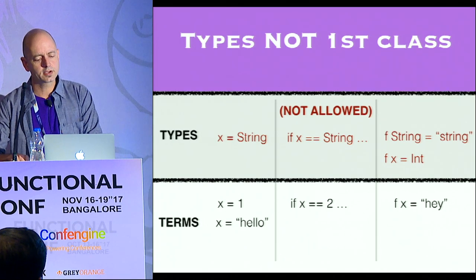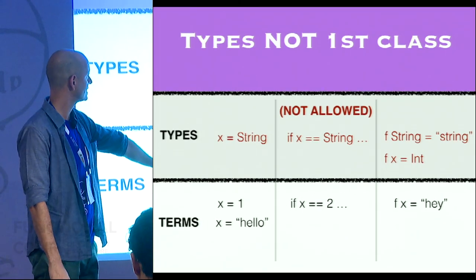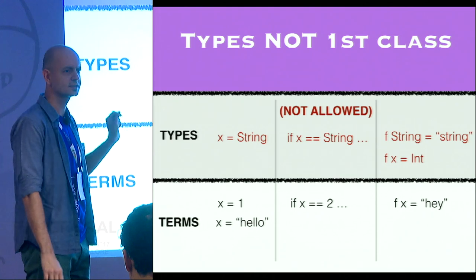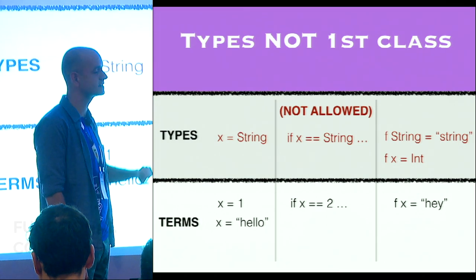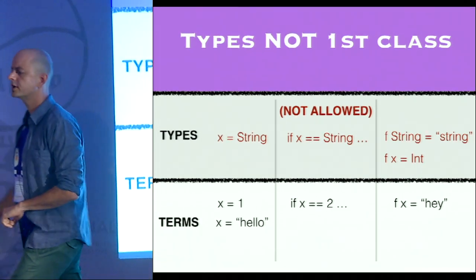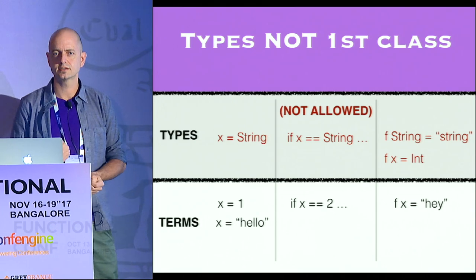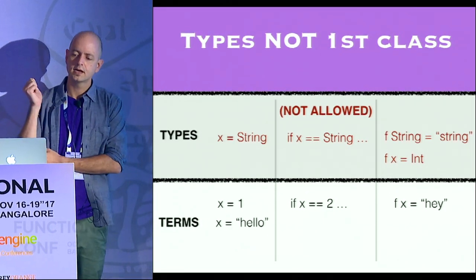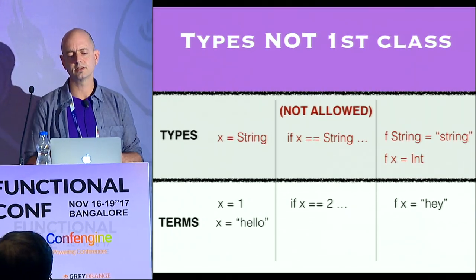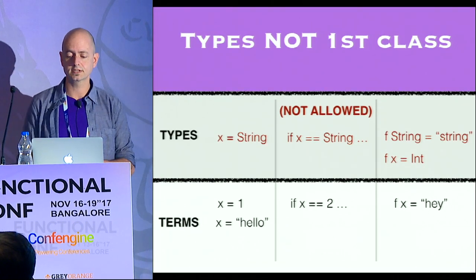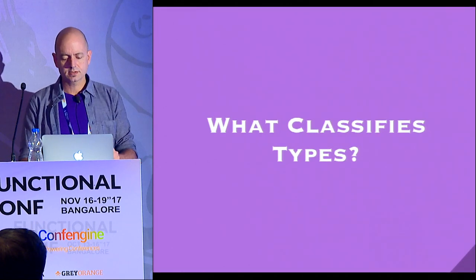Still in Haskell, types are not first class. You can say x equals hello, but you can't say x equals the type String. The compiler doesn't know what you mean. You can do equality on terms, but you can't say if x equals type String. You can pass values to functions, but you can't pass types to functions. You can't return types from functions. So while functions are first class, types are not. The question then is: what classifies types?